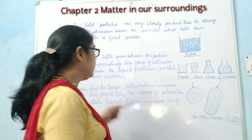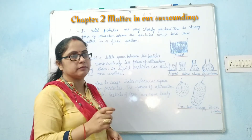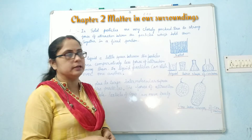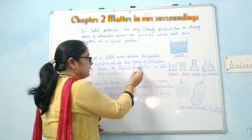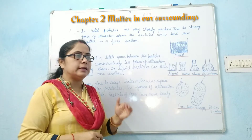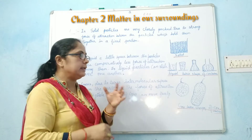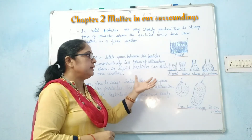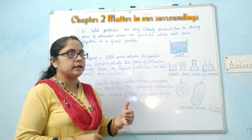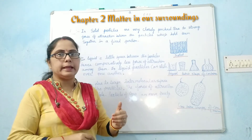In the case of liquid, there is a little space between the particles of liquid, therefore comparatively less force of attraction between the liquid particles. Hence these liquid particles, due to the less force of attraction among them, can slide over one another. That is the reason they will take the shape of the container in which it is poured, or when we transfer the liquid from one container to another, they take the shape of that container.